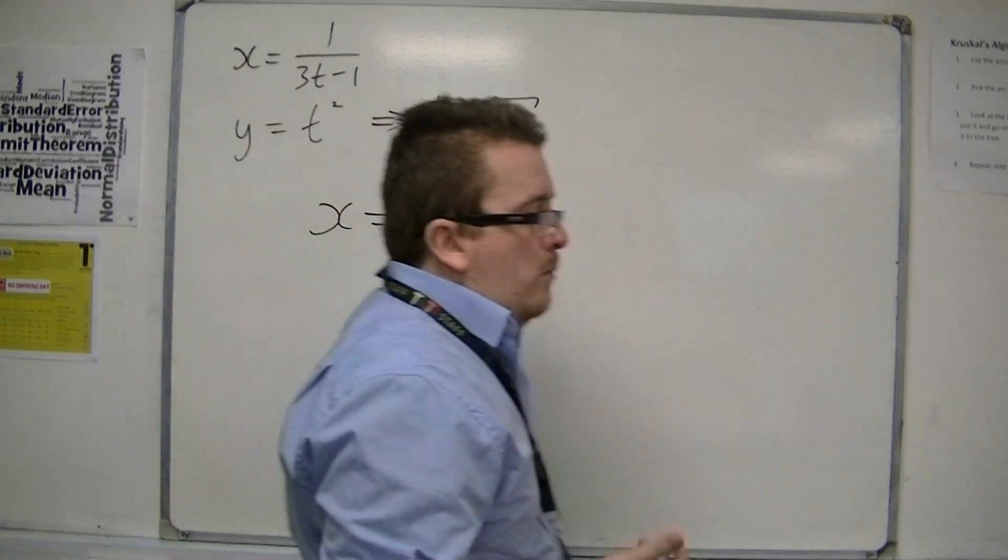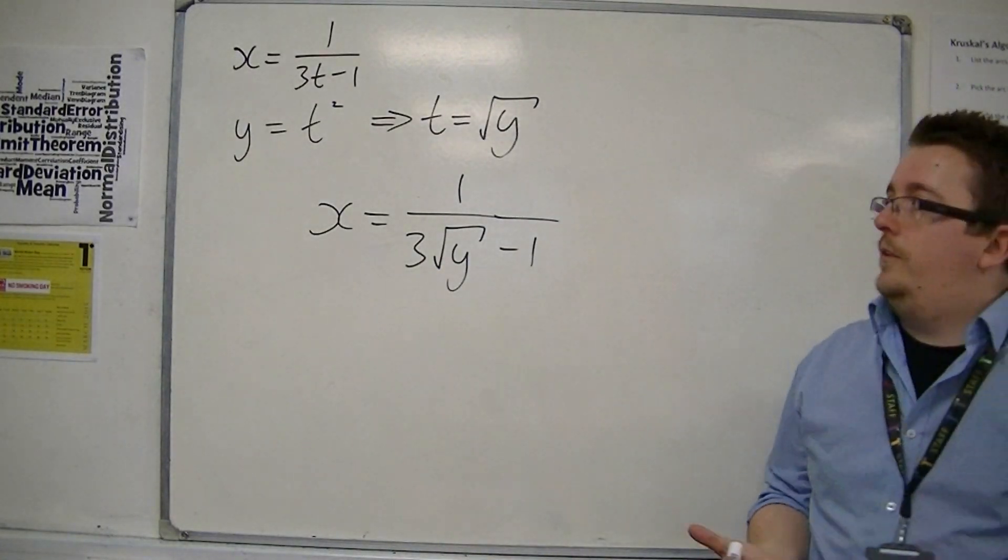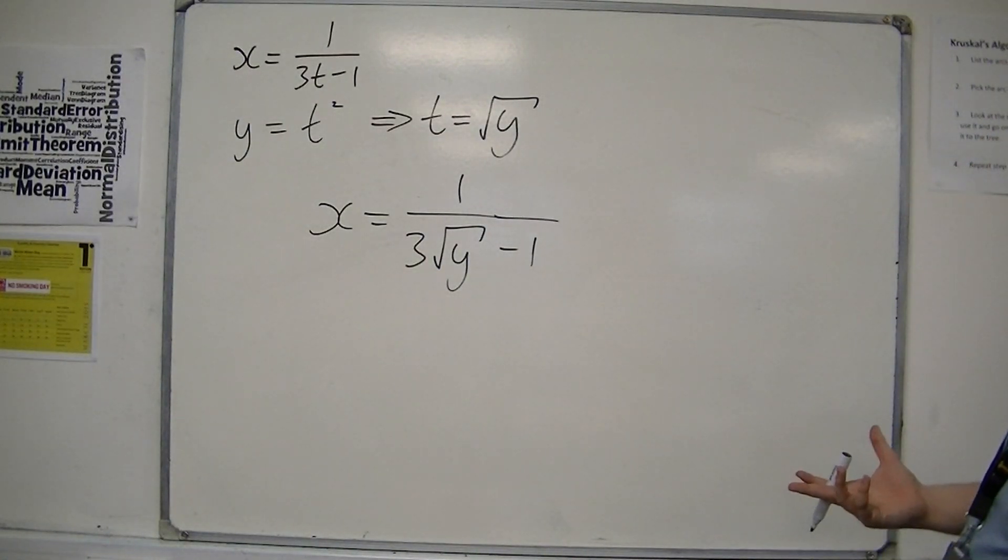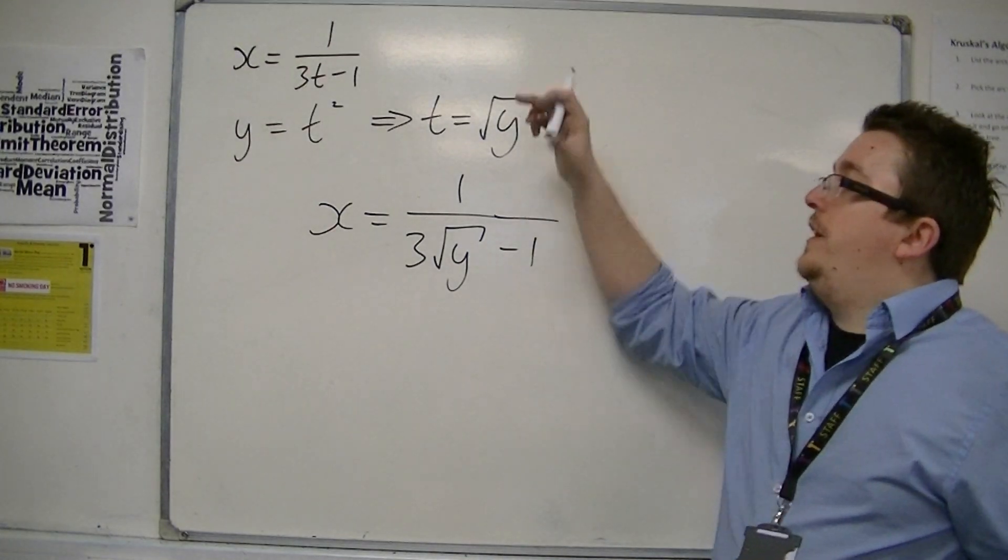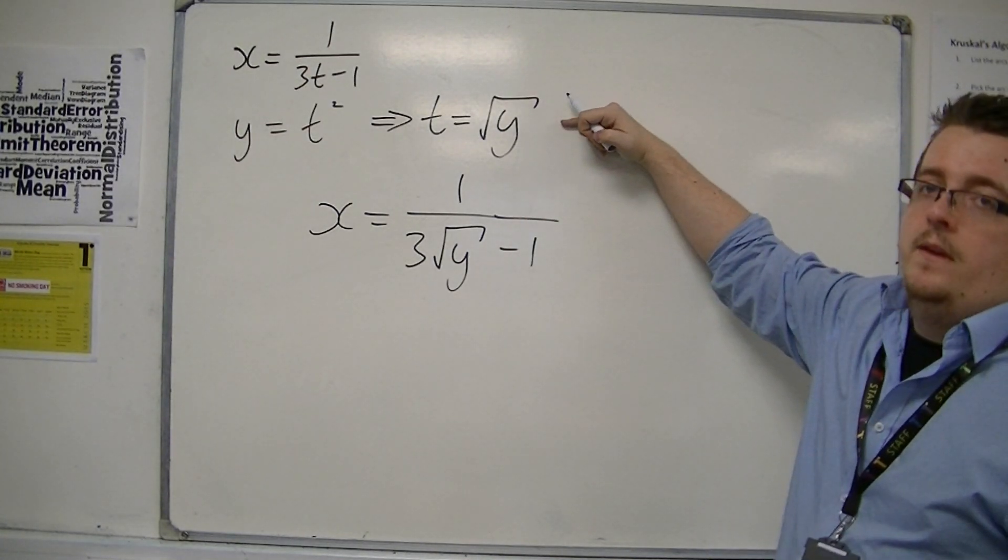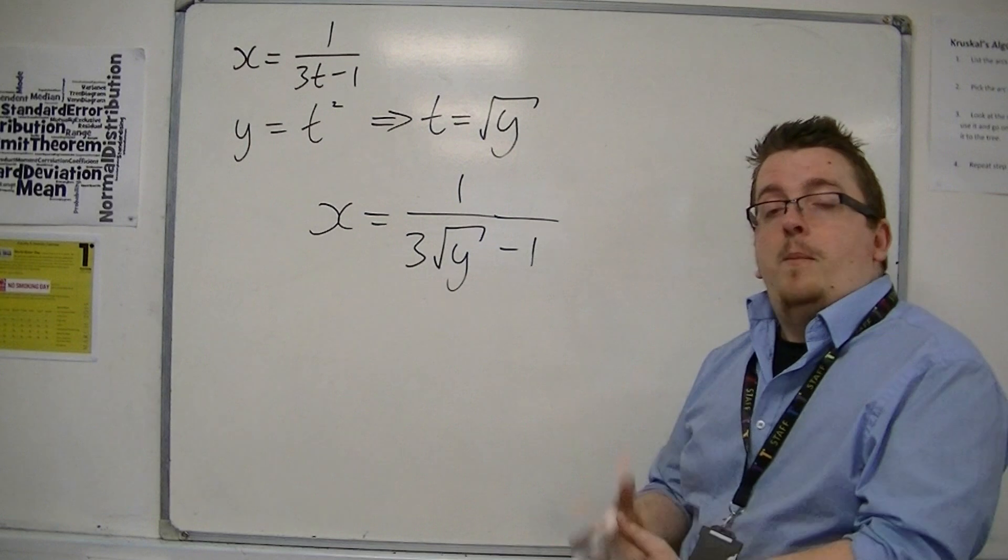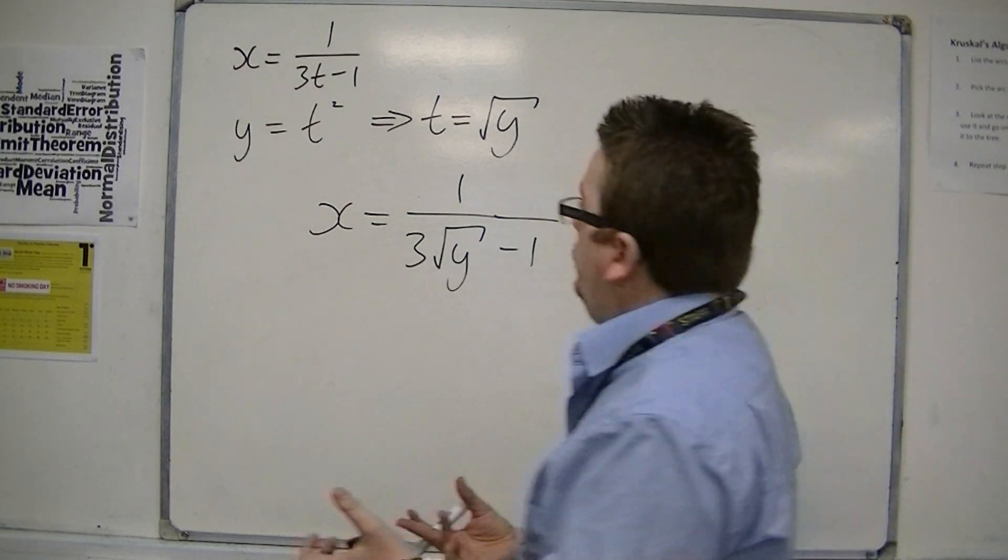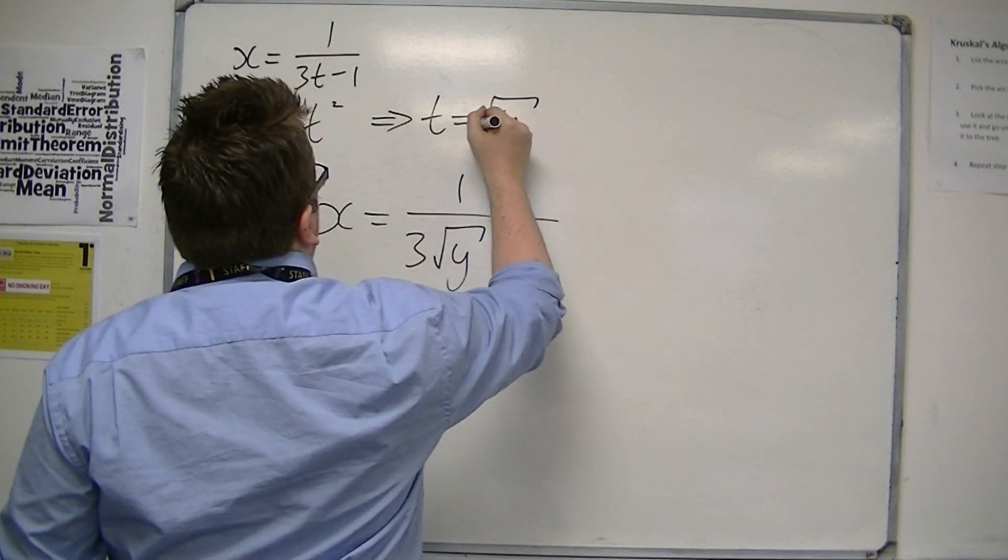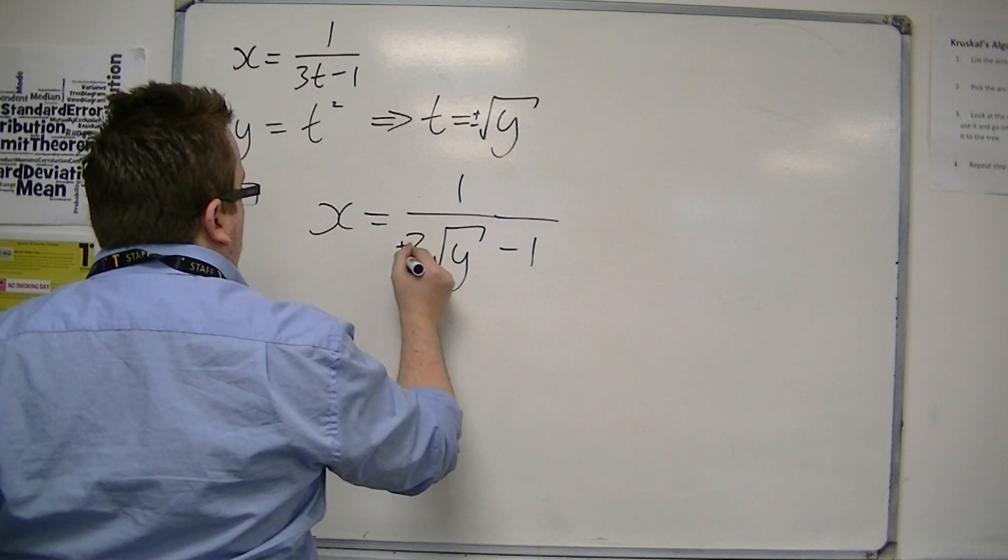Now, the problem with that is when you square rooted the t, that really should bring about a plus minus. So really, there should be a plus minus there, and a plus minus here.